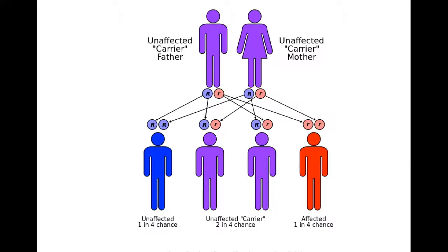Bloom syndrome follows an autosomal recessive inheritance pattern. Individuals who are homozygous recessive for the mutant allele are affected, while individuals who are heterozygous for the mutant allele are carriers of the disease. In a situation where both parents are heterozygous for the mutant allele, as depicted here, there is a 25% chance that any one of their progeny will inherit the disease.